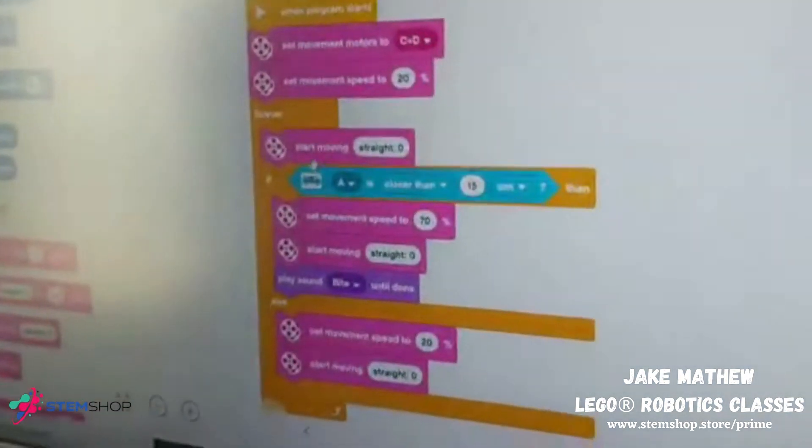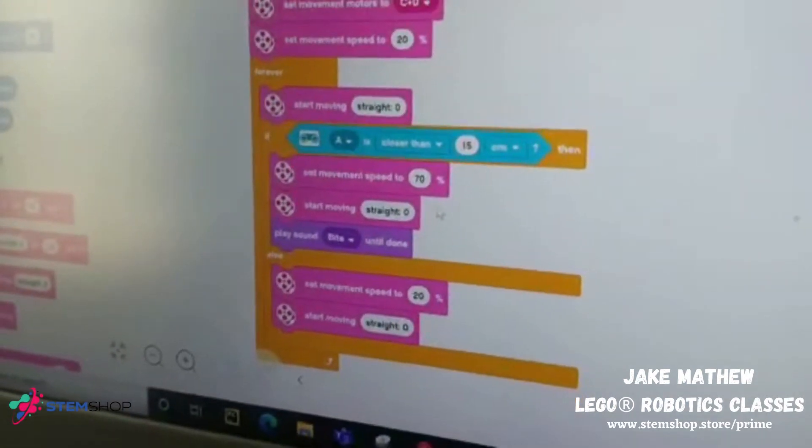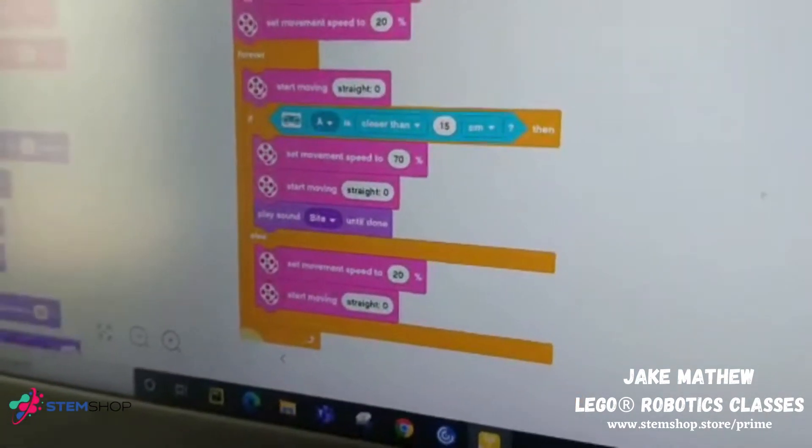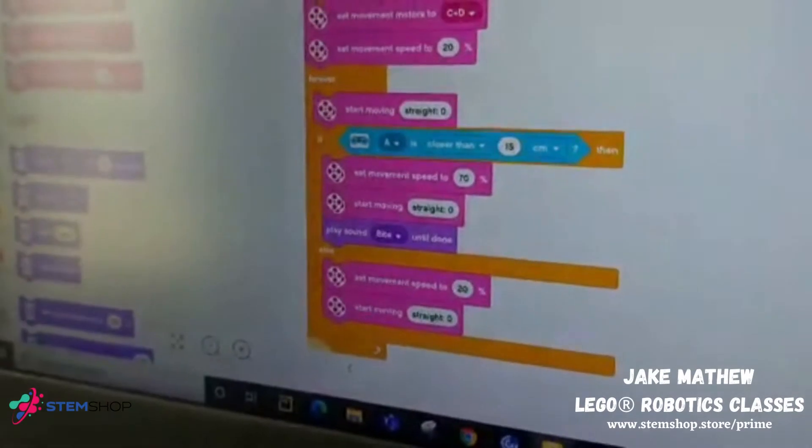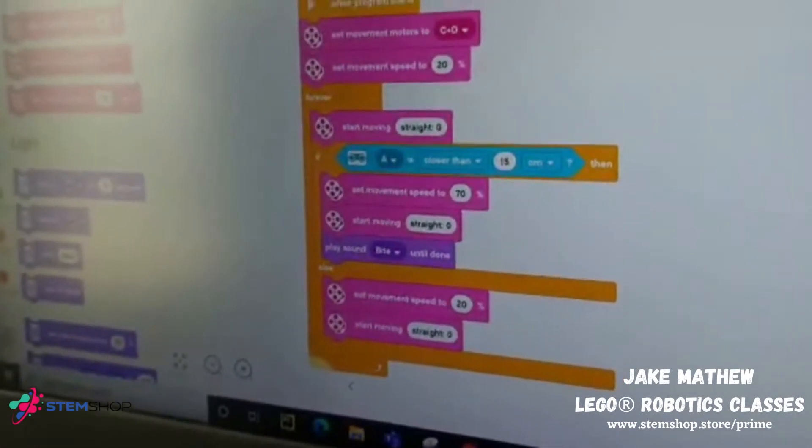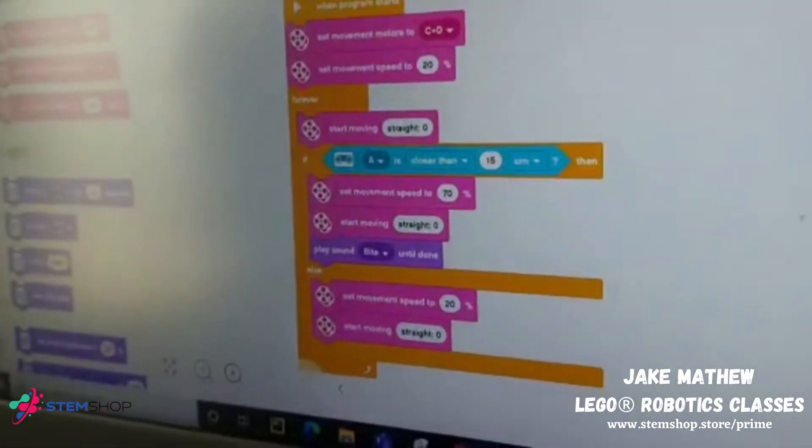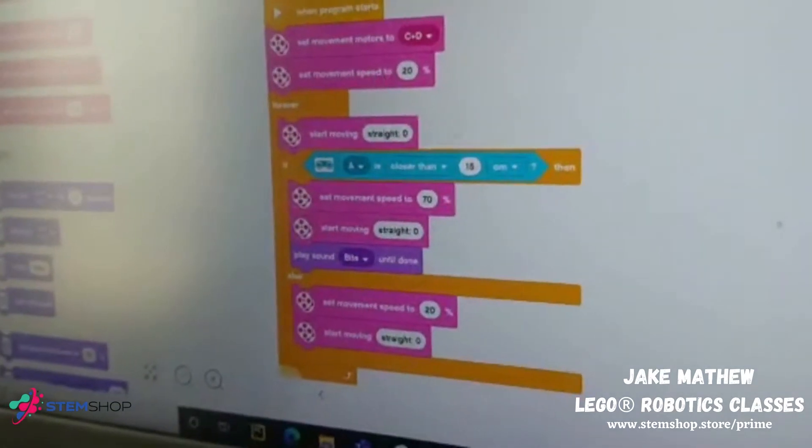Then we need to put start moving straight. It's at the movement block. All the pink blocks are at the movement blocks. Here, all the colors are there.